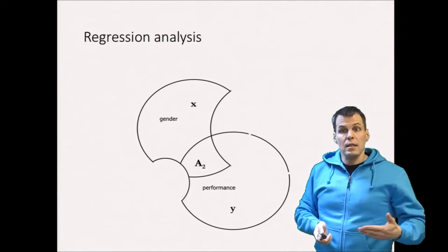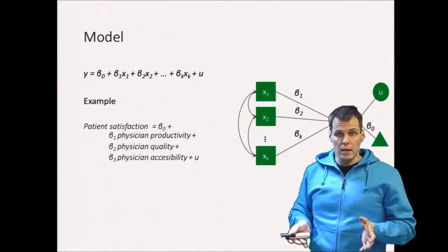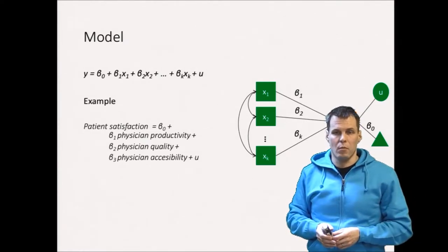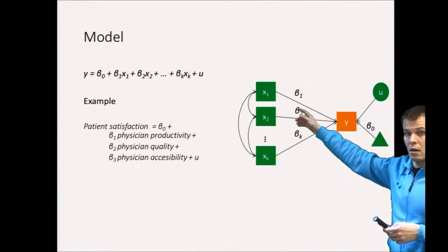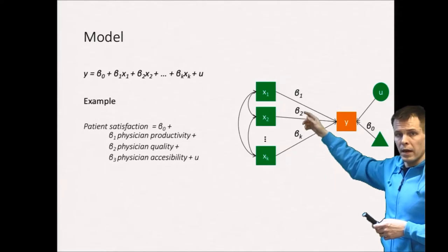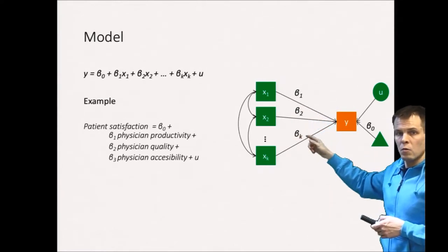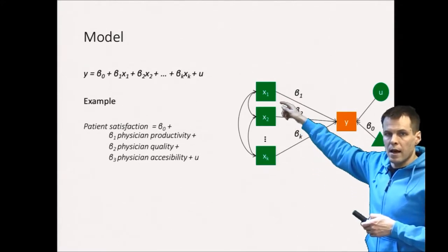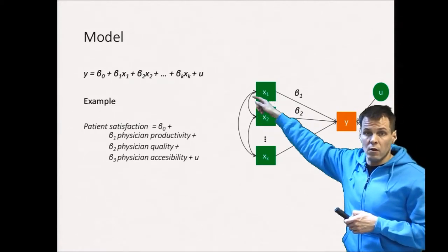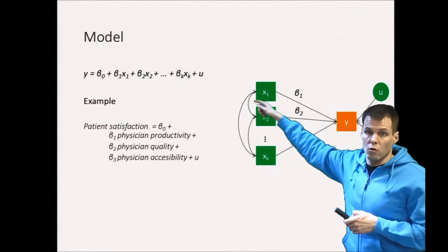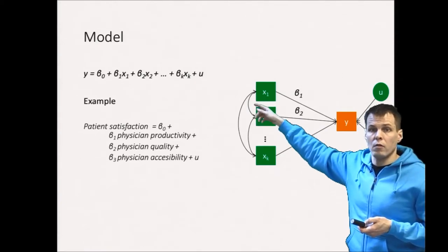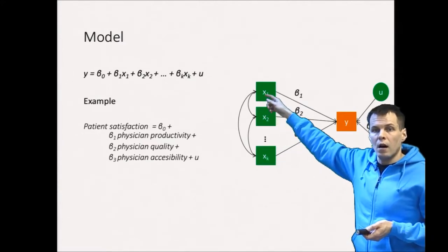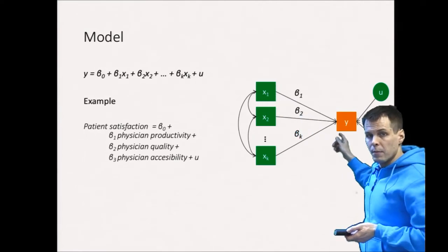Regression analysis is a statistical model and a model is an equation. So whenever you hear the term model it means that there is some math and the model can also be presented as a path diagram like this. I will first talk about the path diagram. The path diagram here has one dependent variable y, three independent variables x and the x's are allowed to be freely correlated. Free correlation is this double-headed curved arrow which means that we don't really care about how these different explanatory variables, usually denoted with x, are related.